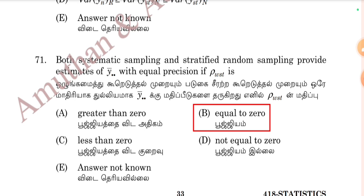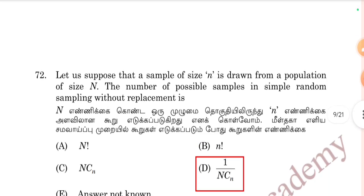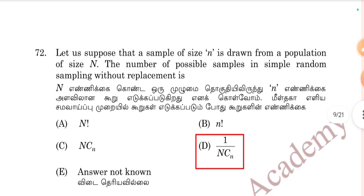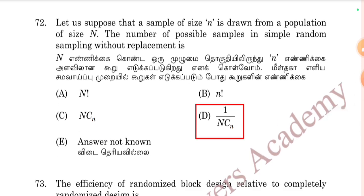The estimate of y-bar double-dot with equal precision in stratified random sampling: if rho of WSTS is equal to zero, the result is equal to zero — Option B is correct. If a sample of size n is drawn from a population, the number of possible samples in simple random sampling without replacement is N-factorial divided by n-factorial times (N-n)-factorial, which is N-choose-n — Option D is correct.